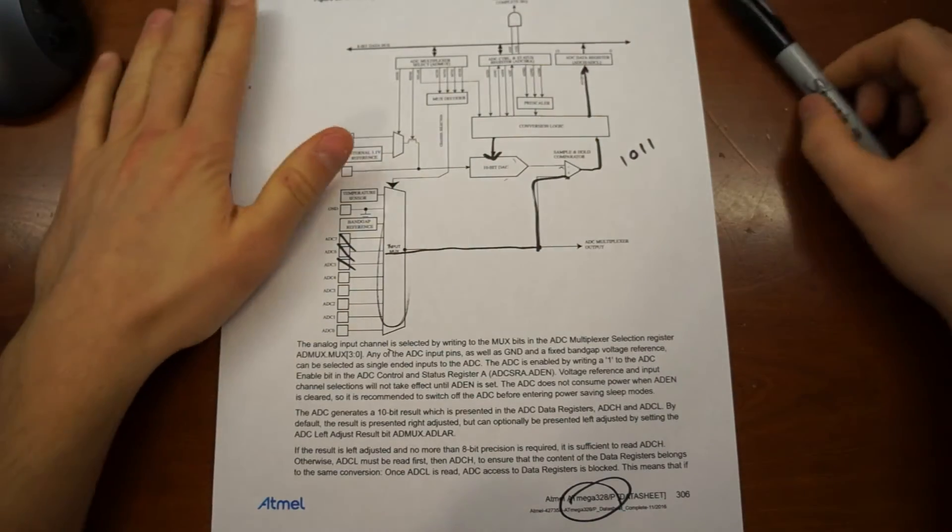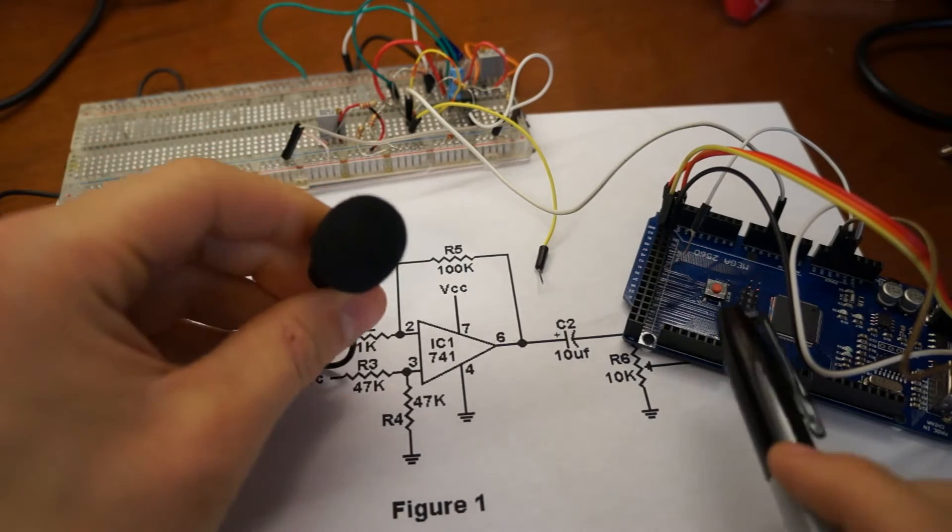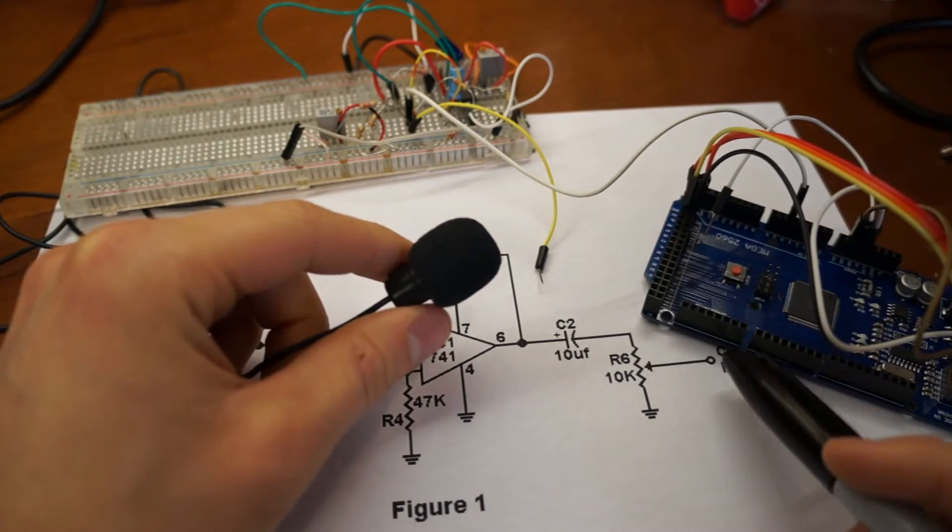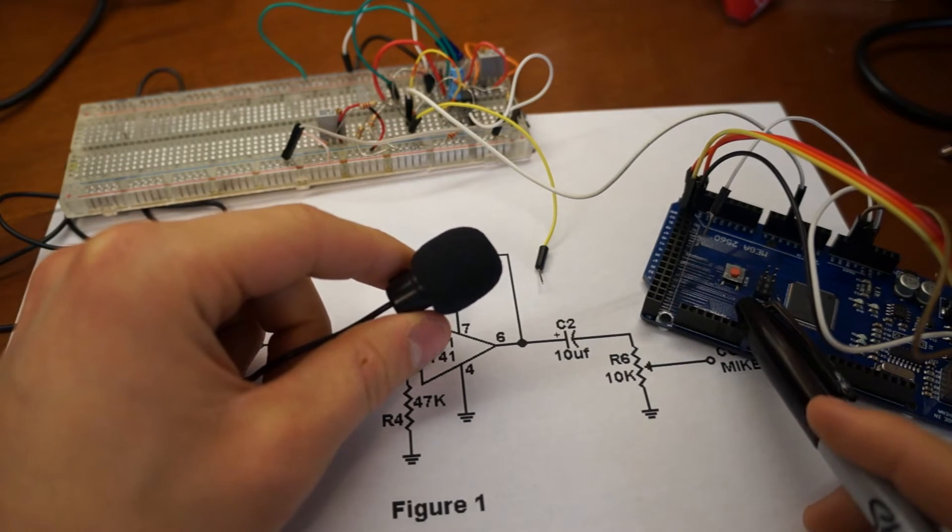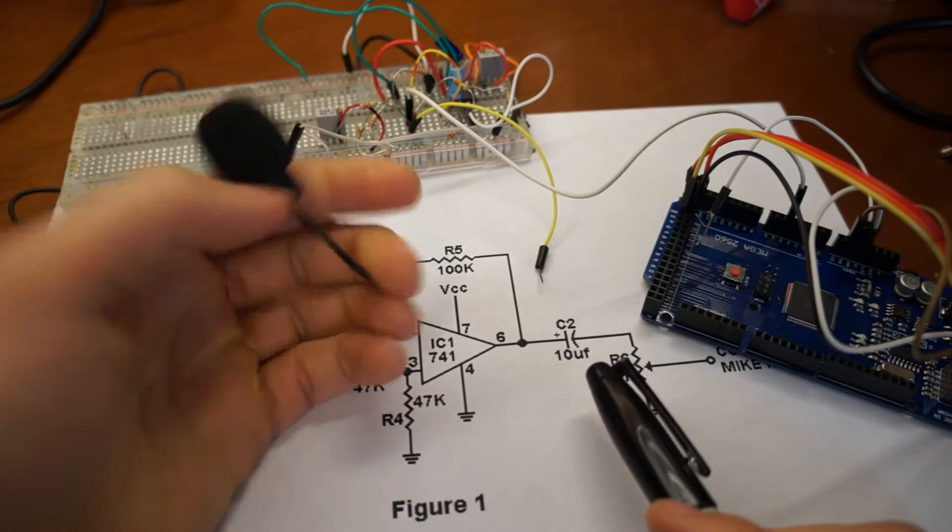So, with that being said, that's a lot of boring stuff. Okay, so we want to record audio using the analog inputs and the successive approximation ADC inside this Arduino.